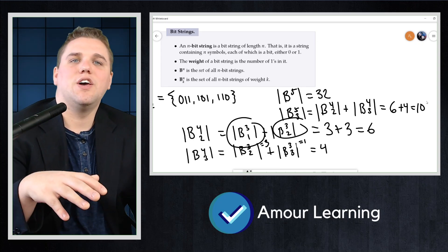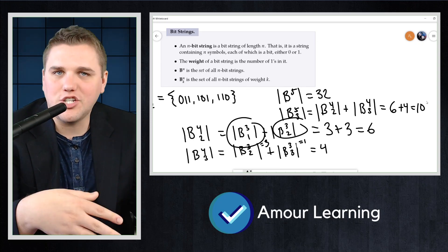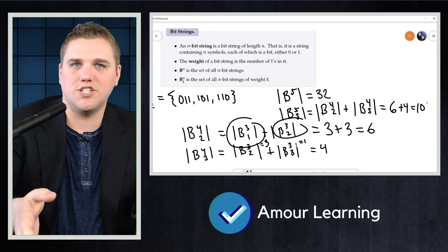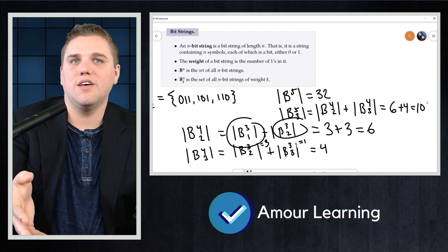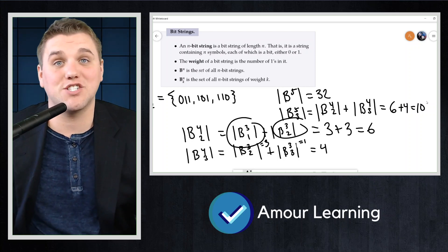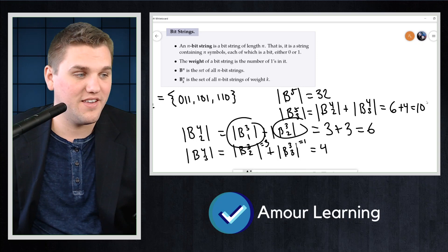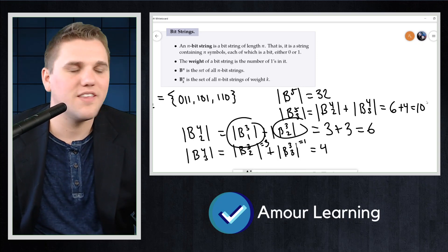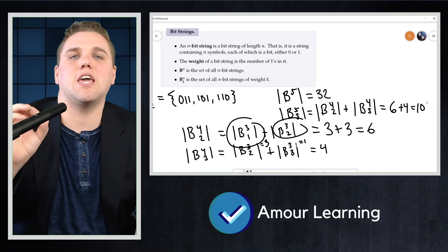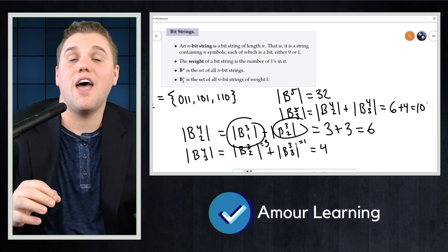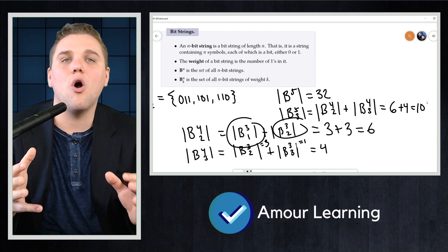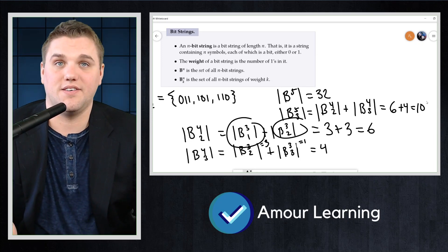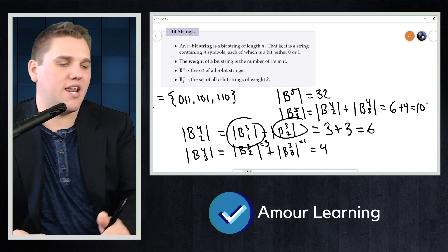Wait — 32 and 10 were the answers to the counting questions about subsets from the last video. Is that a coincidence? Not at all. Each bit string can be thought of as a code for a subset.